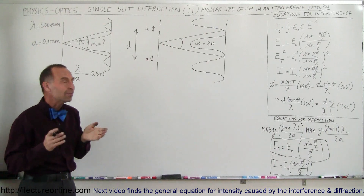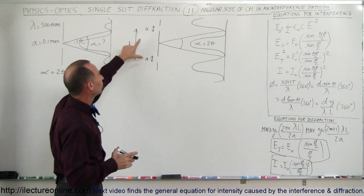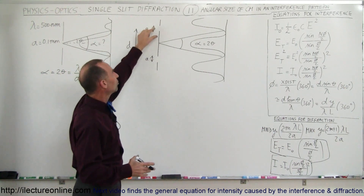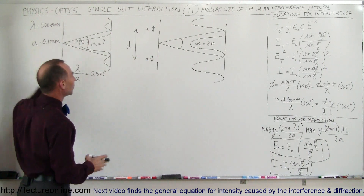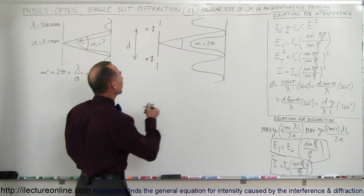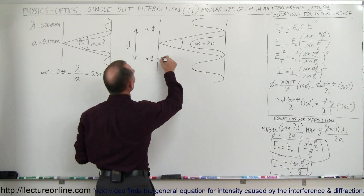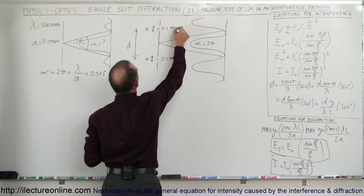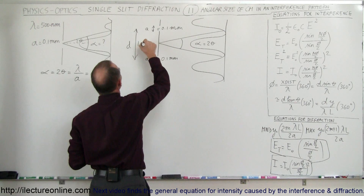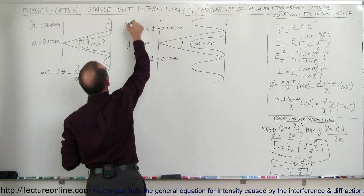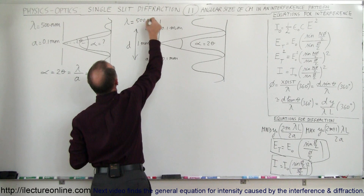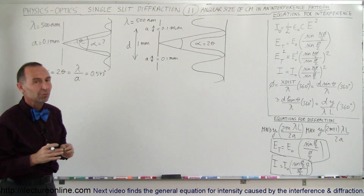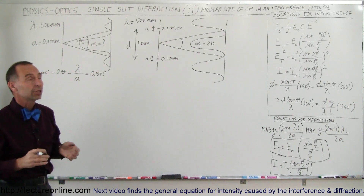Now we're going to do the same thing with an interference pattern. We'll have a double slit where the slits are a distance d apart from one another, and the width of each slit is a — the same size as before. But for now we're going to ignore the diffraction pattern of these slits. So a equals 0.1 millimeter, the distance between the slits d equals 1 millimeter, and the wavelength is 500 nanometers, as before.